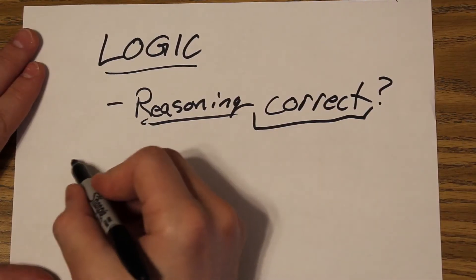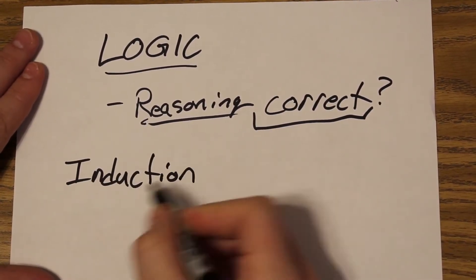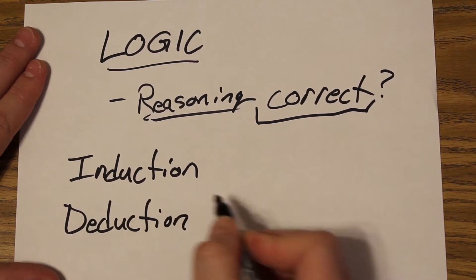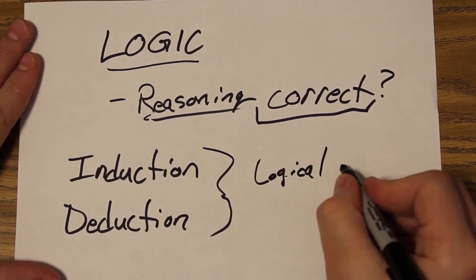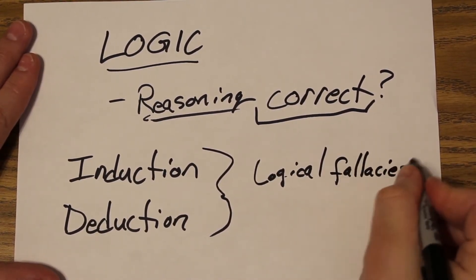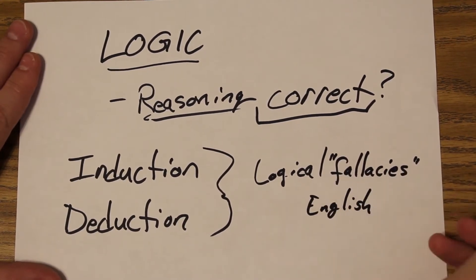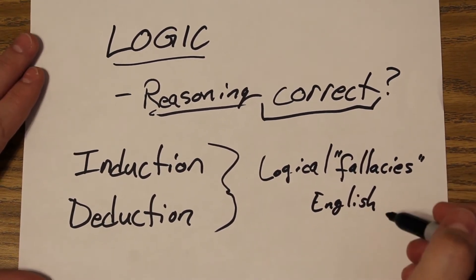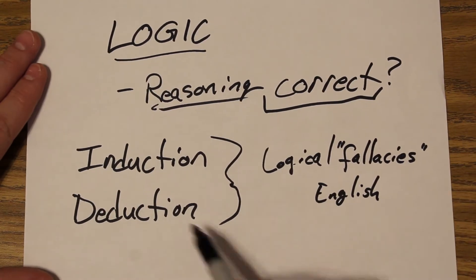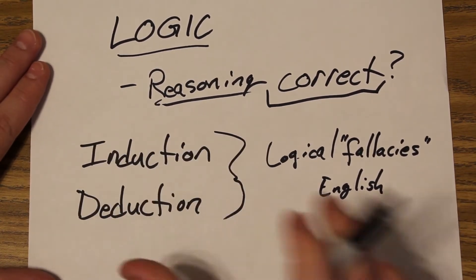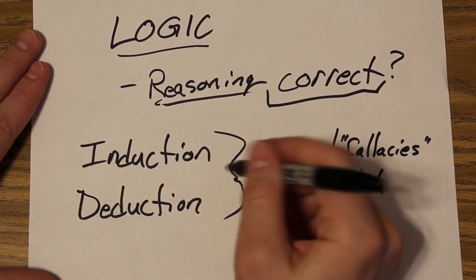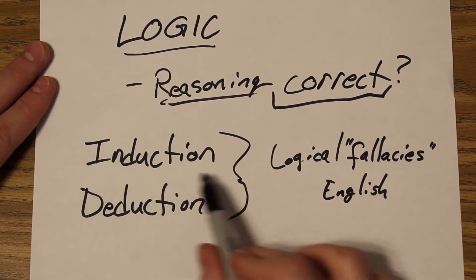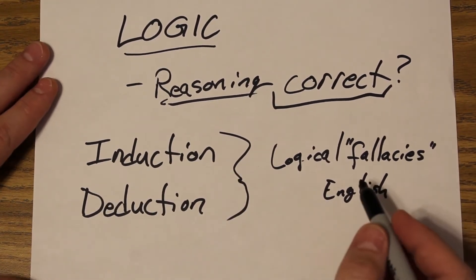What types of logic do we have? Well, there's typically induction and deduction. And you've probably seen this before in an English class. If they do a logical fallacies packet or something like that, you've probably heard about abduction as well, which is just kind of like guessing.